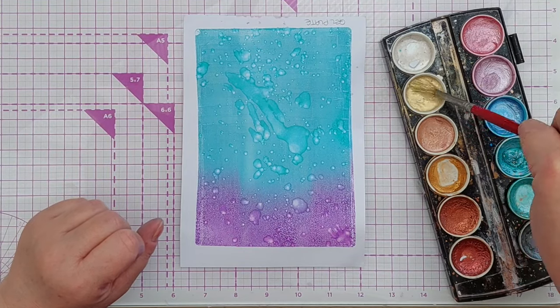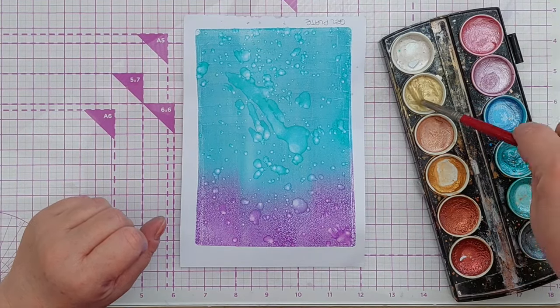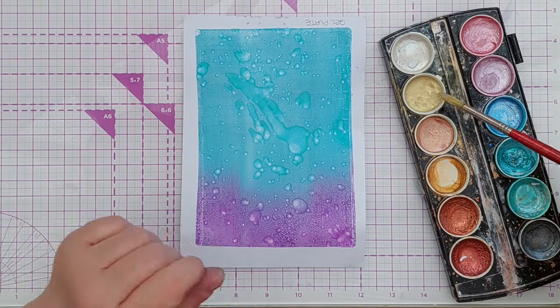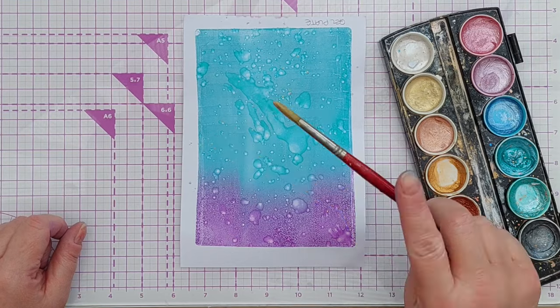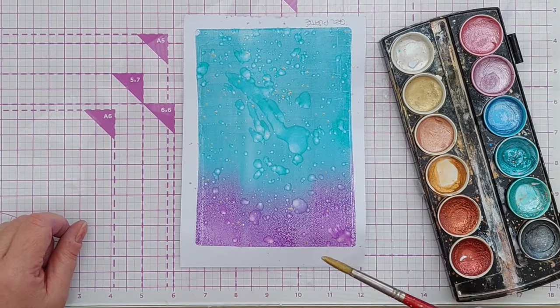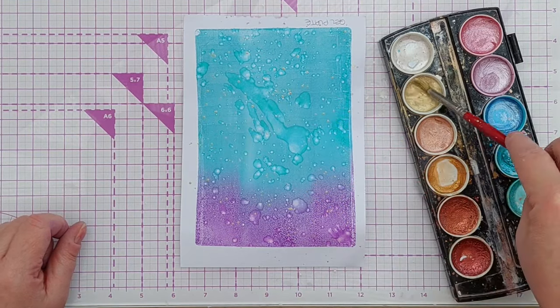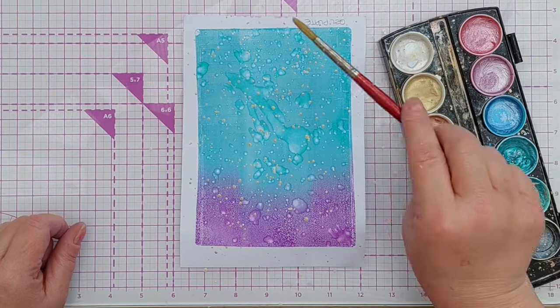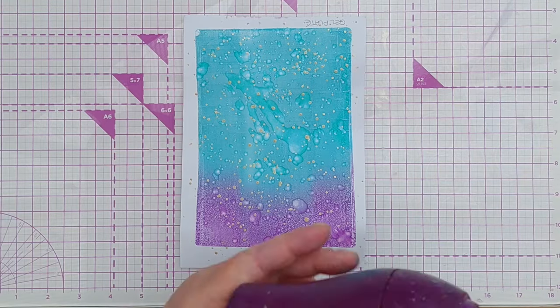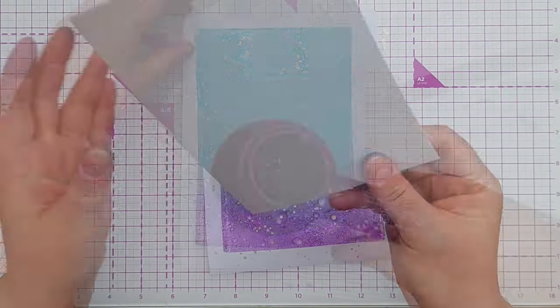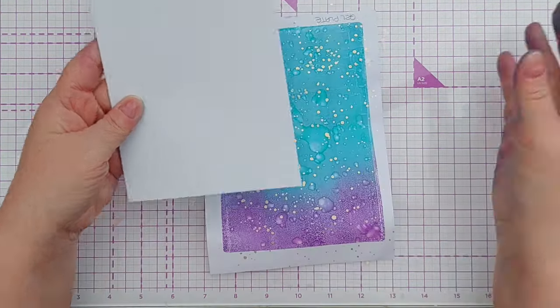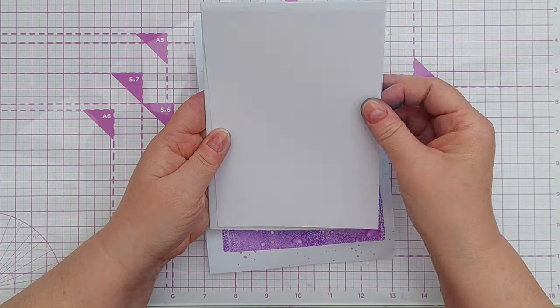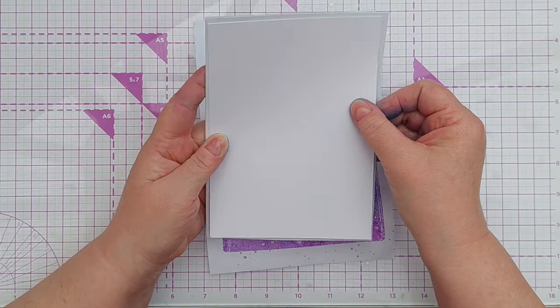This is my hybrid Prima Metallic Accents palette with my favorite paints from the originals and the pastels palettes combined in one. I've just loaded up my brush with this very pale gold, and I'm spattering it on all over for shimmer and shine. Now I'm going to dry it with my hairdryer.